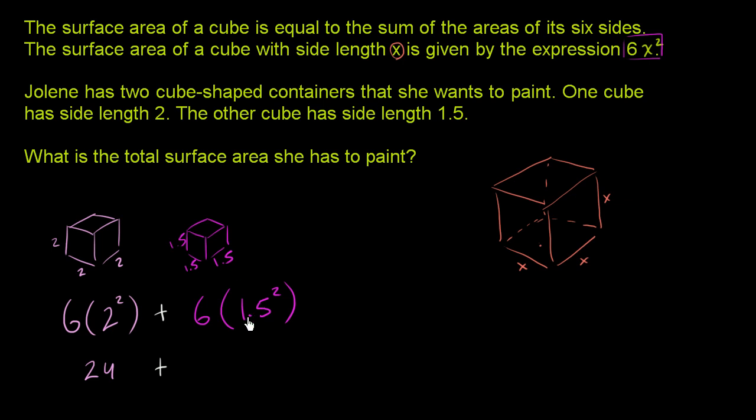So this is going to be, so 1.5 squared is 2.25. And 2.25 times 6, so let me just multiply that out. 2.25 times 6. Let's see.